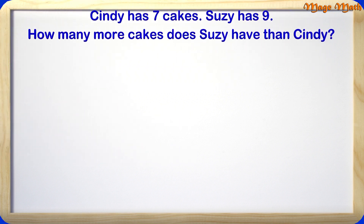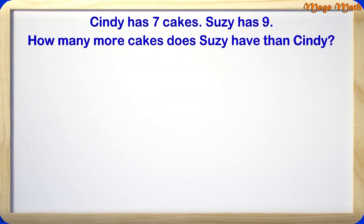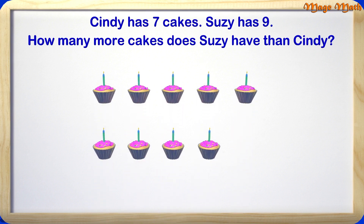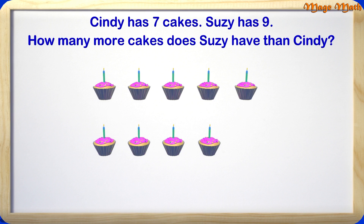The problem says Cindy has 7 cakes. Susie has 9. How many more cakes does Susie have than Cindy? This is similar to problems we just went over. In this problem we are going to be using subtraction to find out how many more cakes Susie has than Cindy. Let's start by drawing the 9 cakes Susie has. To find out how much more, we are going to cross out the 7 cakes that Cindy has to show us how many are left.